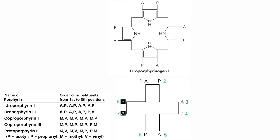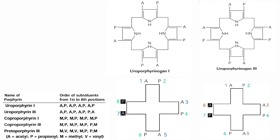When the substituent groups have an asymmetrical distribution of substituent groups 1, 3, 5, 8 and 2, 4, 6, 7, then those are called as type 3 series.